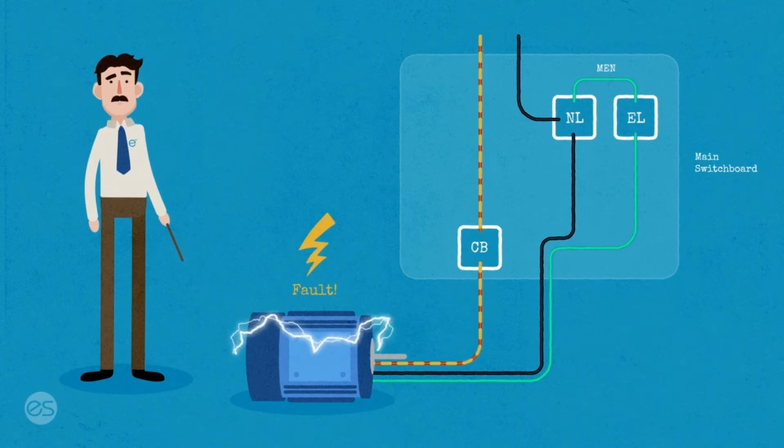We need to automatically disconnect the circuit. Notice what happens. The fault current tries to find a path back to the source. In this case, through our earth conductor.